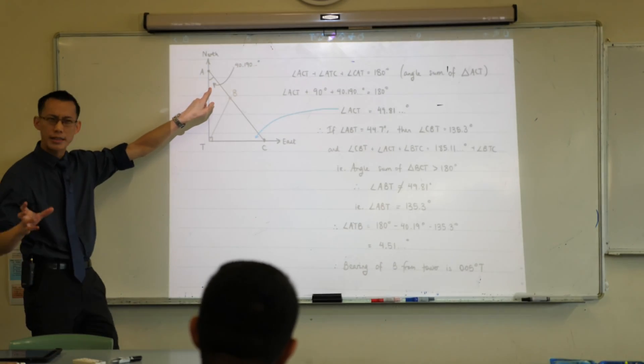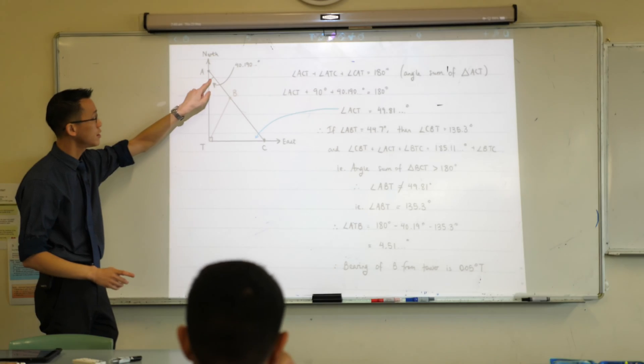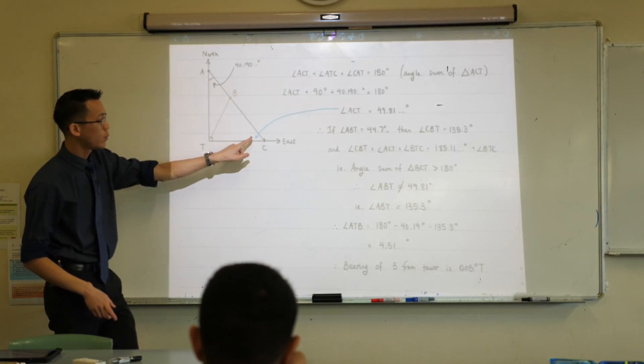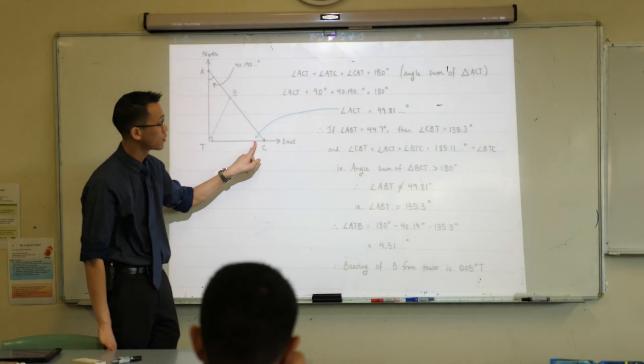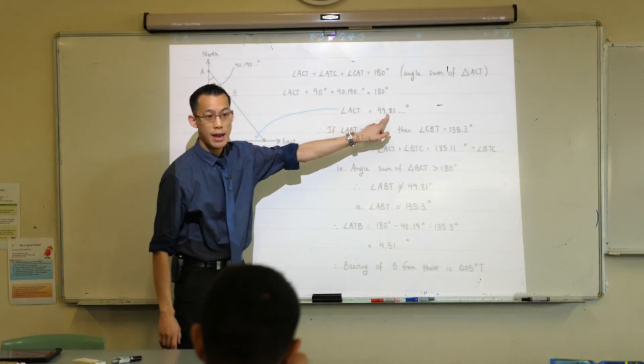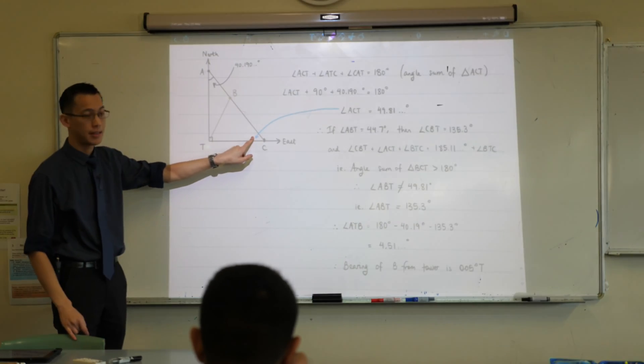Here's where I looked. Angle sum of ACT, this guy here. So this is the big triangle, and it's on the ground. This 40.19, we worked that out earlier. So using that, and there's a right angle, you can work out this guy here, ACT. Do you see that? Are you following the working? I just used the angle sum of a triangle. It's 49.81. So now I know how big this is.